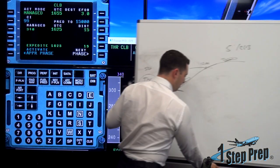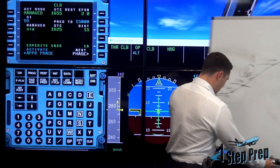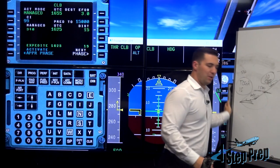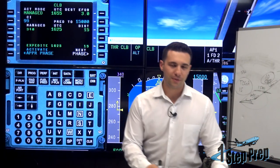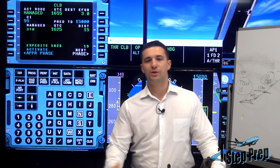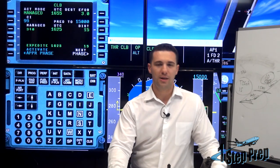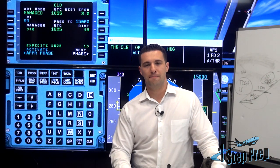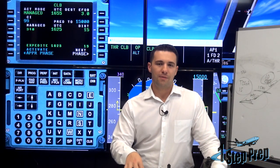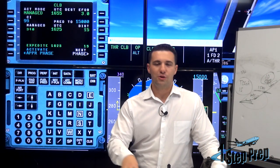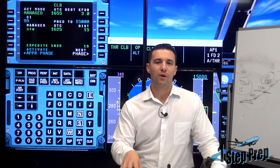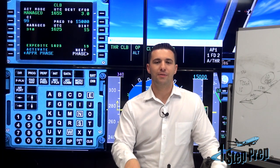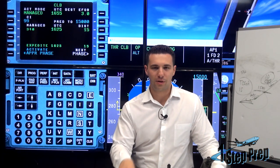There are some other elements to the airspeed unreliable memory item involving configuration: 0, 1, 2, 3 maintain; config full, retract to and maintain config 3. Verify speedbrake retracted, landing gear up.